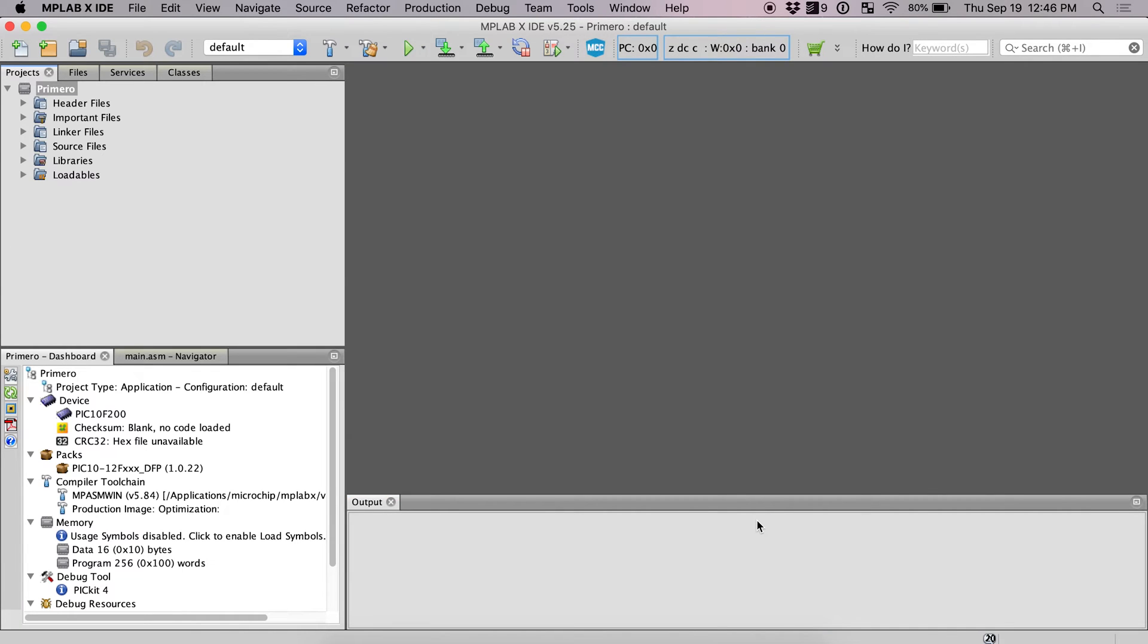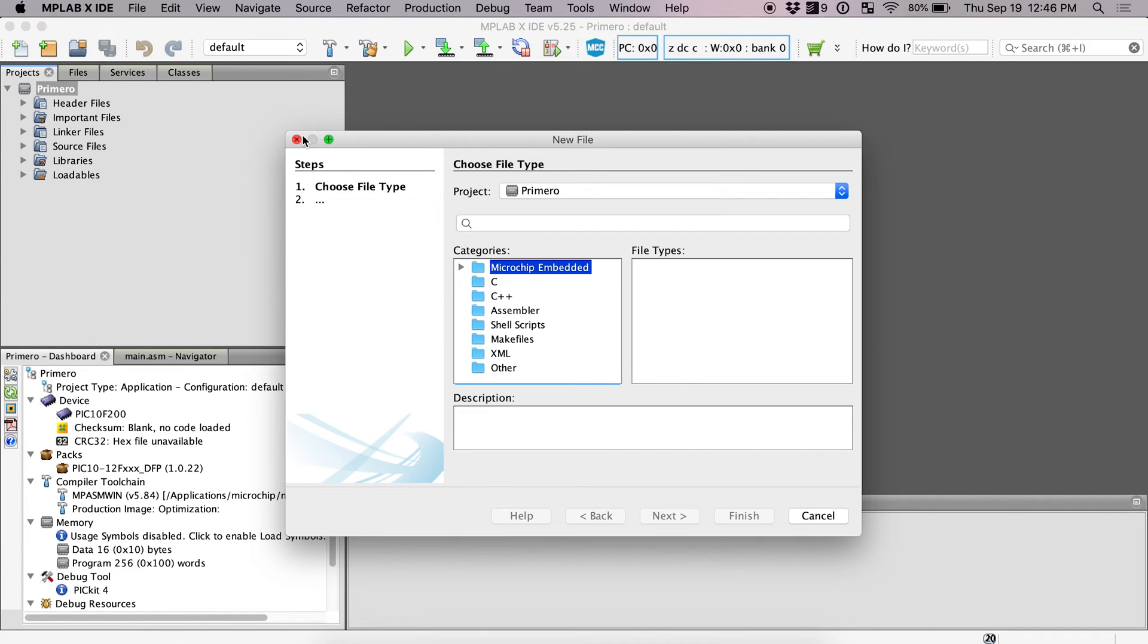And it's that easy. We already have a project set up. It's got the right microcontroller in there. We're good to go. So now we have our project, but we don't have anywhere to put our code. So let's create a new file.